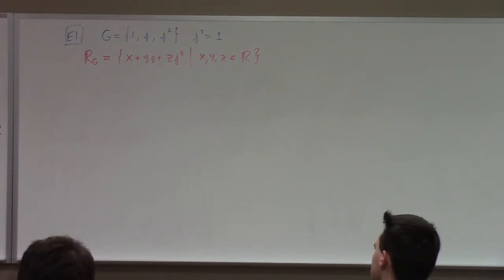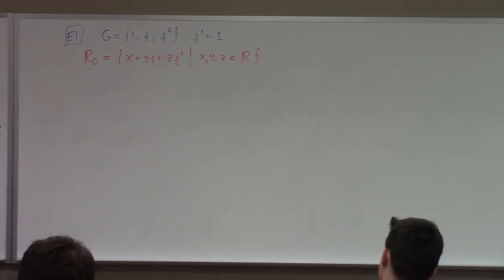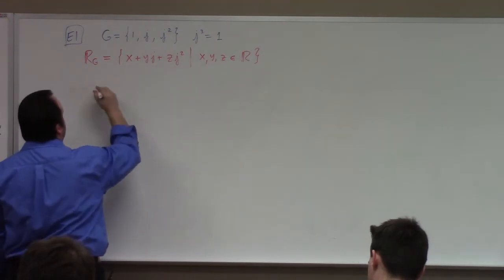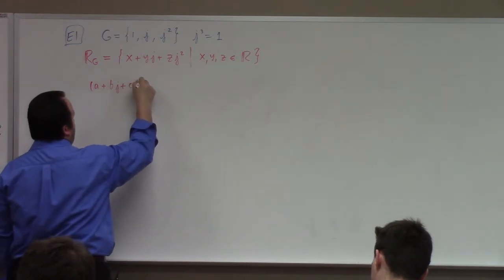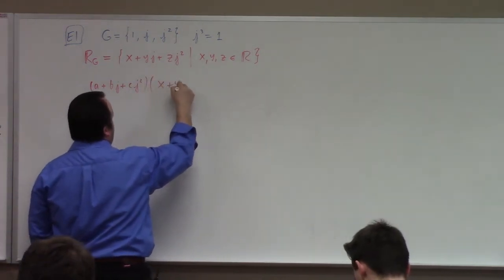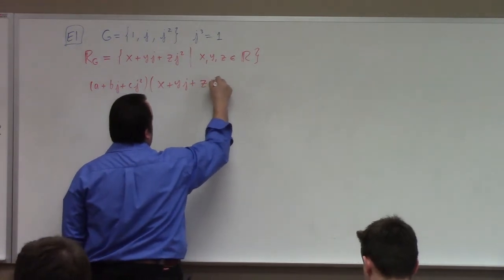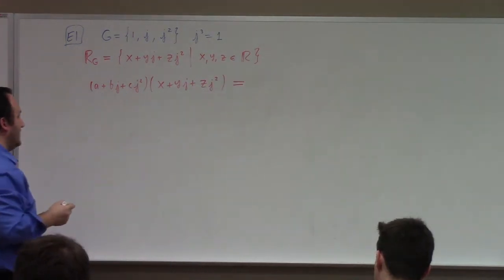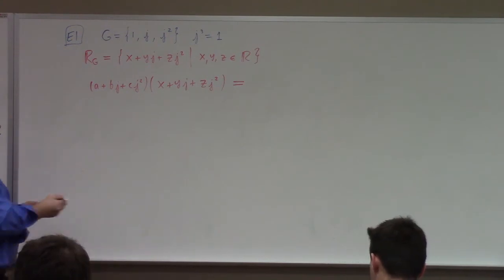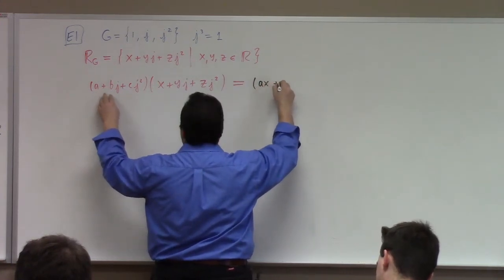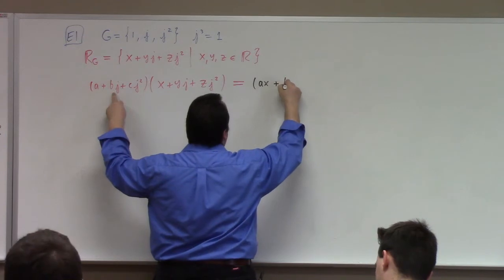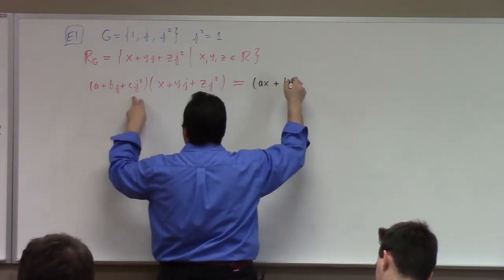So this group algebra is not a group, but it is an algebra in the natural sense of being a ring while being a vector space, also closed under multiplication. The way you multiply things is by the usual (A plus BJ plus CJ squared) times (X plus YJ plus ZJ squared). This gives AX plus CY plus BZ.